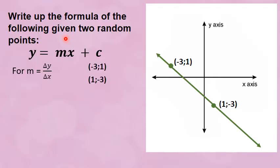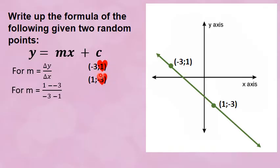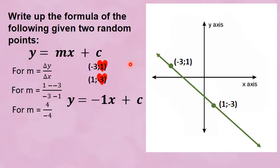For gradient it's change of y over change of x. I write my two points and highlight the y values. Starting from top to bottom: change of y is 1 minus negative 3, which becomes 1 plus 3, over change of x: negative 3 minus 1. That simplified gives you negative 1. So y is equal to negative x plus c.